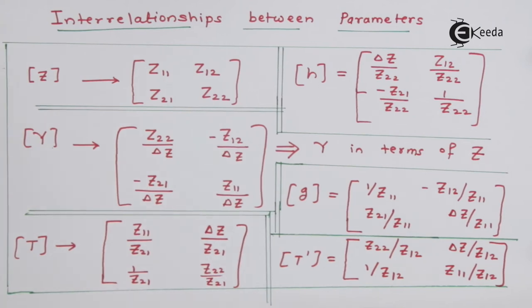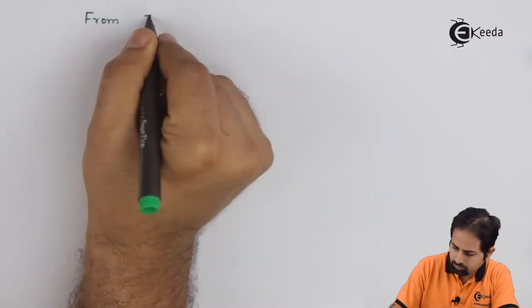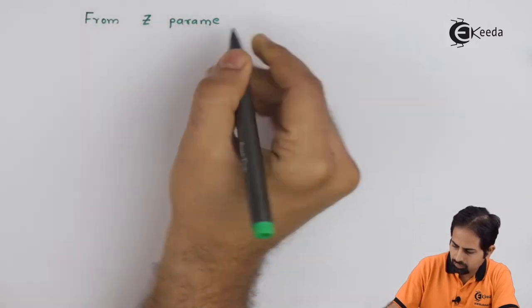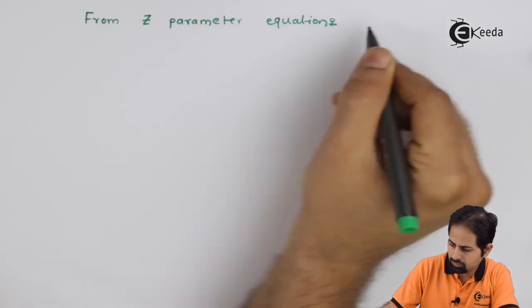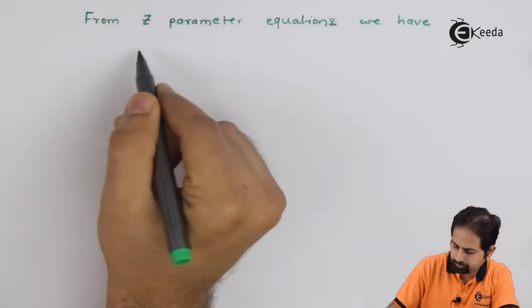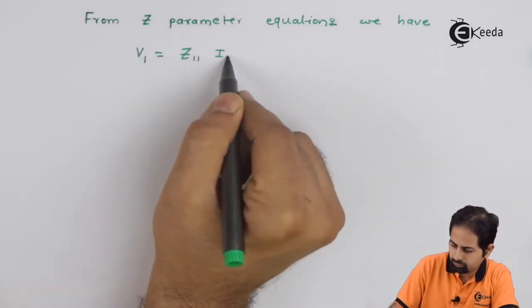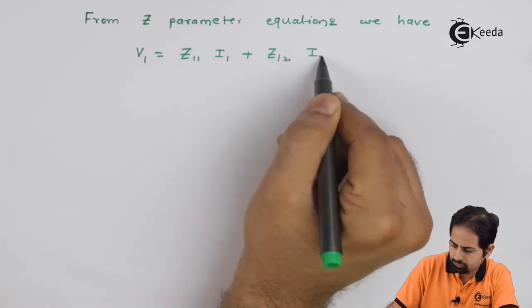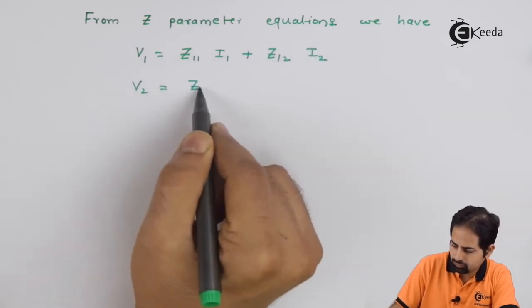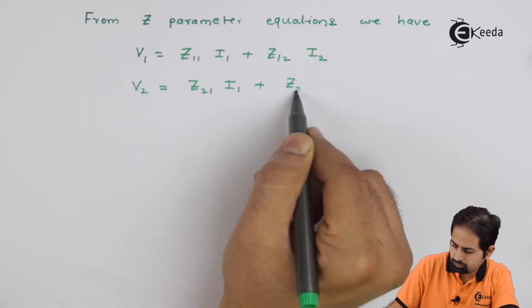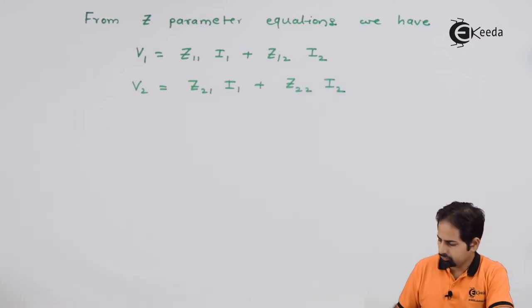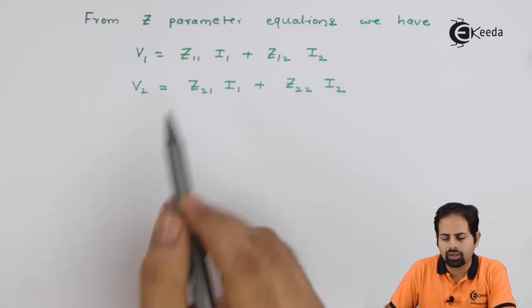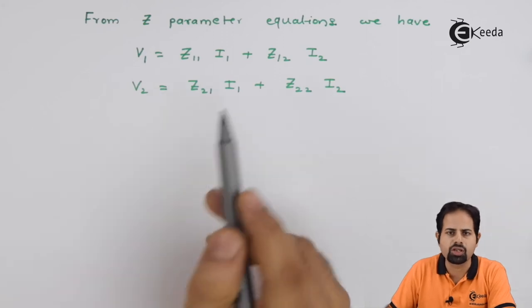So now we will represent and prove how this Y parameter is represented using this matrix. For that we will start with Z parameter equations. As you can see here, these are the basic equations for Z parameter.